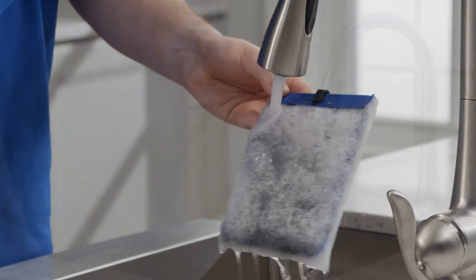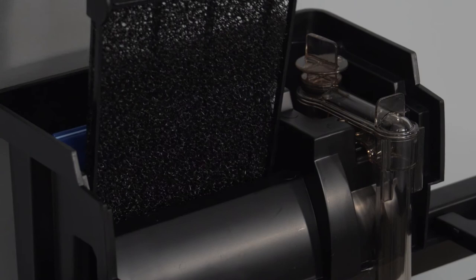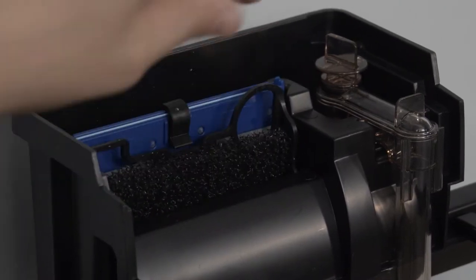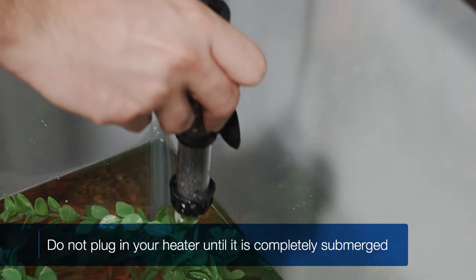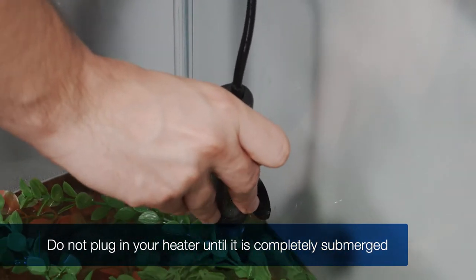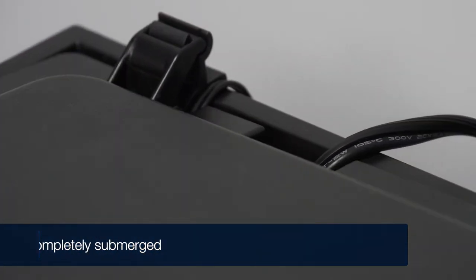After a quick rinse to remove carbon dust, add your new cartridge and foam media pad to the filter. Then, feed your heater's plug through the cord slot in the hood, and suction cup your heater as low as you can. Make sure it's completely underwater before plugging it in.